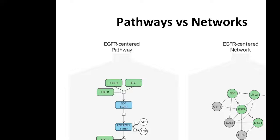The advantage of the pathway view is that you understand the mechanism, but it is typically the product of human curation — going into the literature and extracting these pathways. They typically cover only a portion of genome space; the best pathway databases cover maybe a third of well-annotated genes in the genome. In contrast, networks tell you less about mechanism but are more expansive, bringing in less well-characterized proteins.